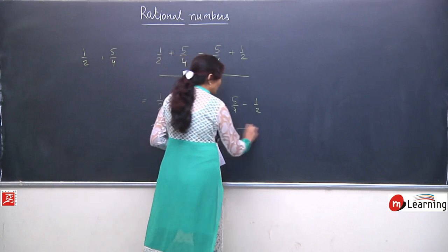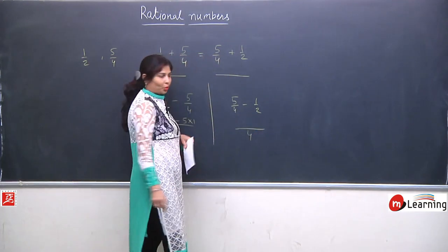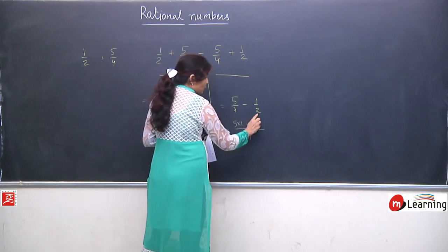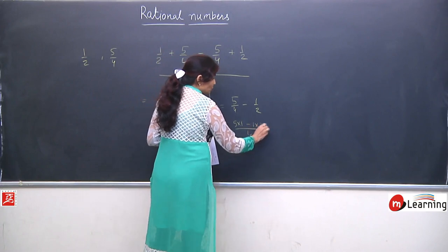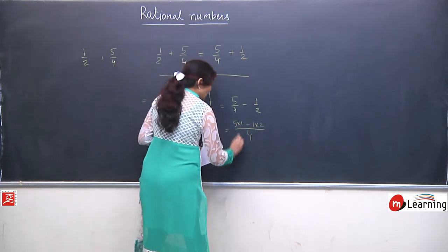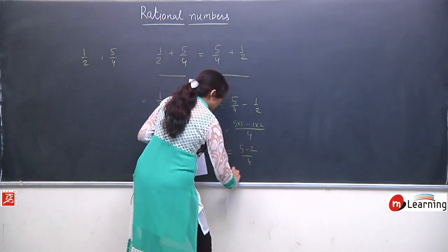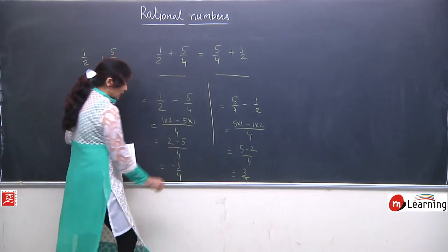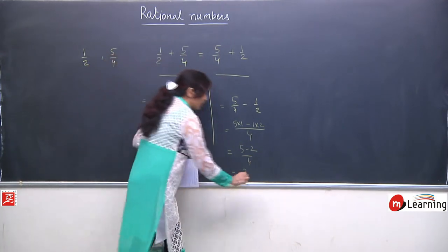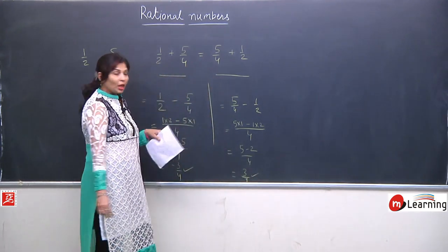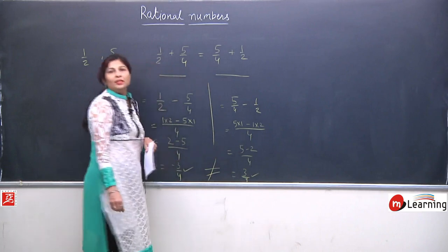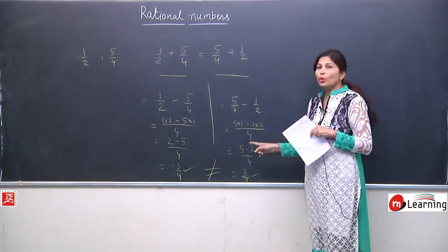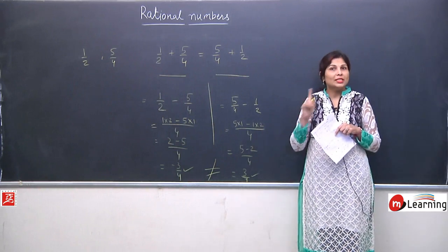Similarly, we solve the second part: LCM is 4, so 5/4 − 2/4 = 3/4. Here the left-hand side answer is −3/4 and the right-hand side answer is 3/4. Are they equal? No, they are not equal. This means rational numbers do not support the commutative property for subtraction.